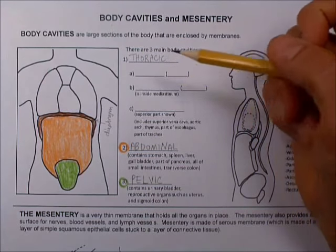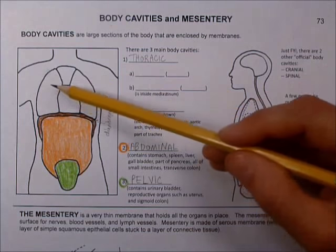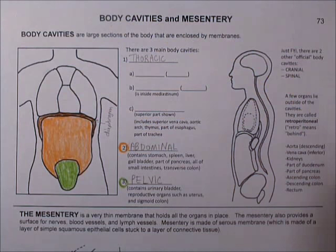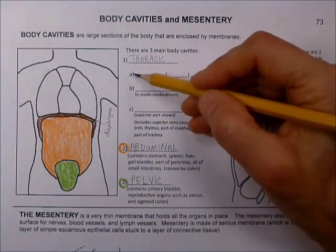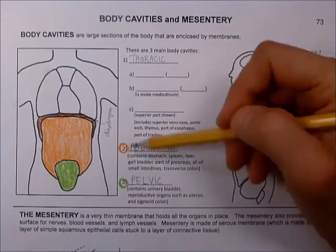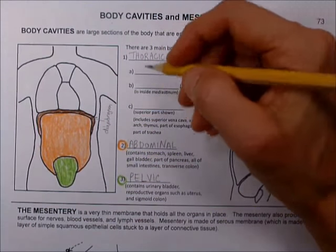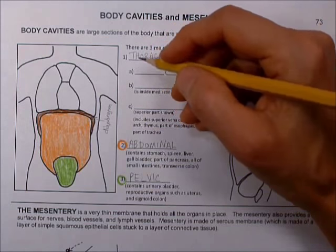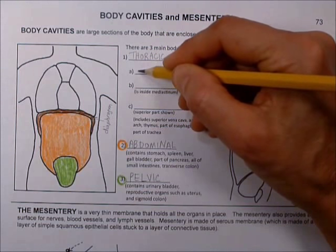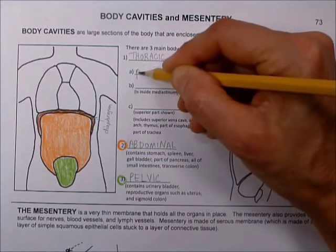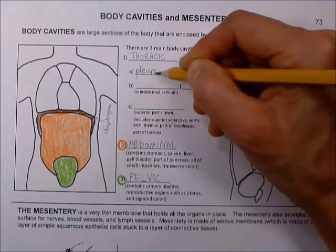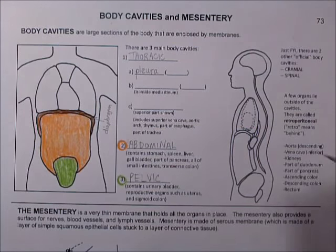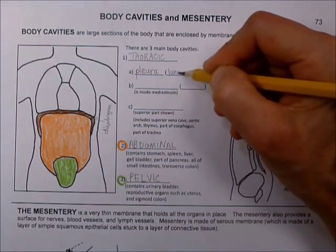Now for the thoracic up here: the thoracic cavity has three smaller cavities inside of it, or it's made up of three smaller ones. I labeled them A, B, and C just because we already had one, two, and three. So A is going to be the pleura — P-L-E-U-R-A — and this is the lungs.